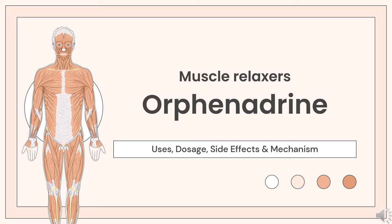Orphenidrine is a muscarinic antagonist used as an adjunct for the symptomatic relief of musculoskeletal pain and discomfort.